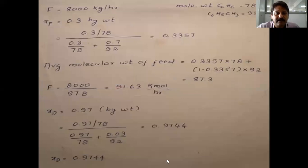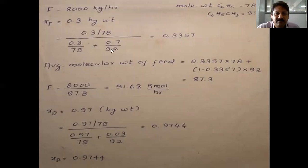The feed is 8000 kg per hour. To convert to kilomoles, note that the feed contains 30 percent benzene and 70 percent toluene by weight. Converting to mole fraction: 0.3 divided by 78 (molecular weight of benzene), divided by the sum of 0.3/78 plus 0.7/92, gives xF = 0.3357. The average molecular weight is 0.3357×78 + (1−0.3357)×92 = 87.3. So feed F = 8000/87.3 = 91.63 kmol/hr.